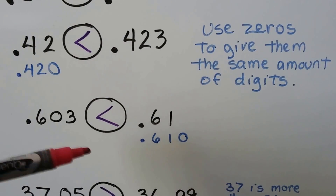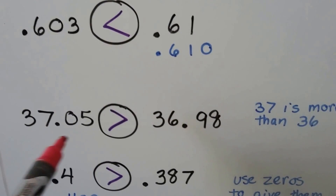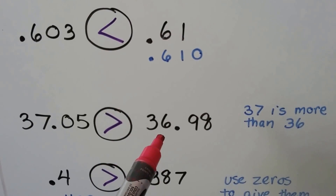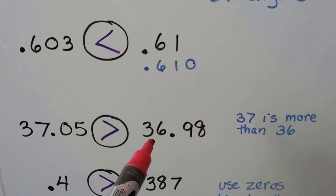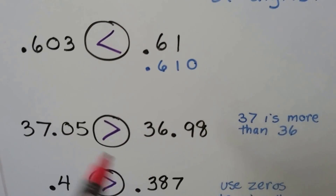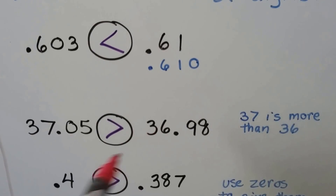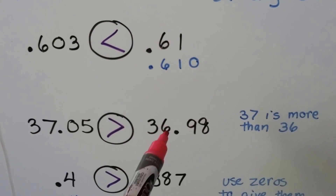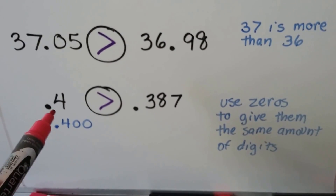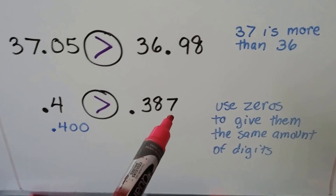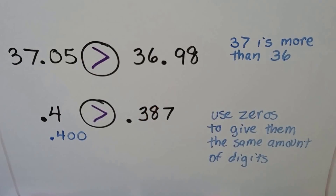The farther we go to the right, the smaller the number gets. We have 37 and 5 hundredths, and we have 36 and 98 hundredths. This one has 37, this one has 36 — and 37 is greater than 36. So it doesn't matter that this only has 5 on this side of the decimal and that has 98. The ones are still bigger — 7 ones is still greater than 6 ones. We have 4 tenths and 387 thousandths. We add zeros to this one so they both have three digits, and we can see 400 is greater than 387.